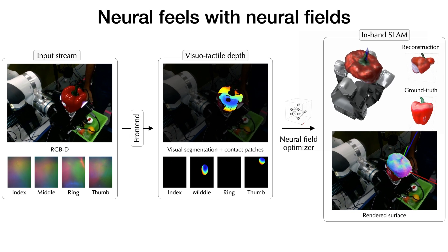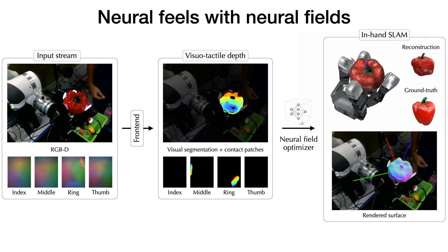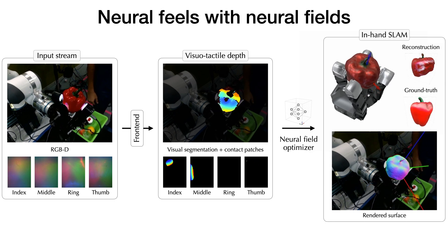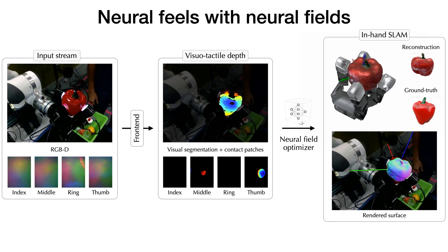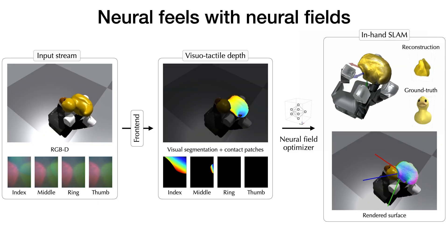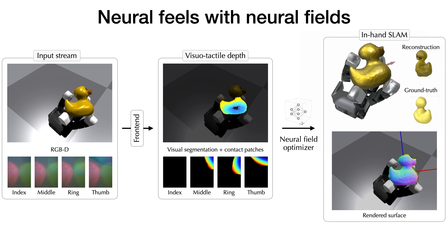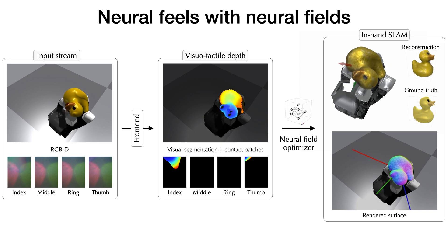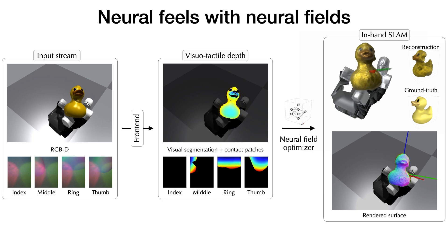Our manipulation is carried out by a proprioception-driven reinforcement learning policy. The object model is initialized with the first visual frame, and over time it is completed from visual and tactile depth information. We also overlay the tracked pose of the object on the rendering on the bottom right. We see a similar result from simulation data on a rubber duck object. Our simulation combines the physics of Isaac Gym with the tactile rendering capabilities of TACTO. The rotating visualization on the top right shows how a reconstruction compares against the ground truth.